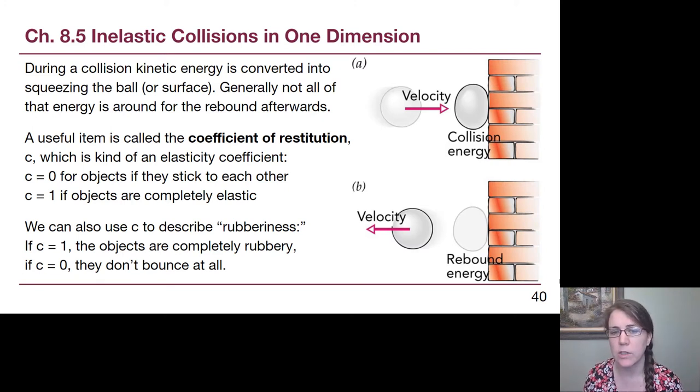You can also kind of think of it as rubberiness. So if C equals 1, then the objects are completely rubbery, like a perfect super ball. And if C equals 0, they don't bounce at all. Mud isn't going to bounce.